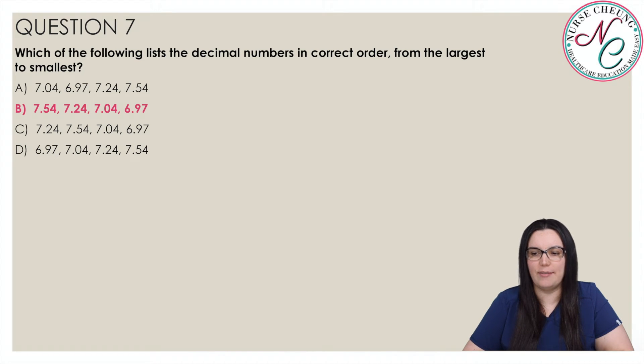The number 7.24 is the next largest number. It has a 2 in the tenths place, while 7.04 has a 0 in the tenths place. The number 6.97 is the smallest of the four numbers, so B is correct.